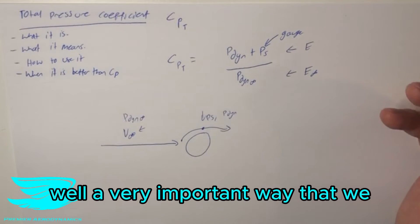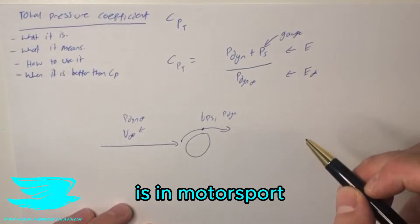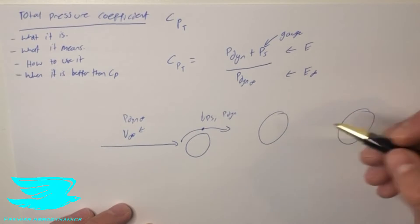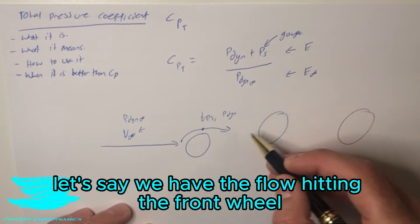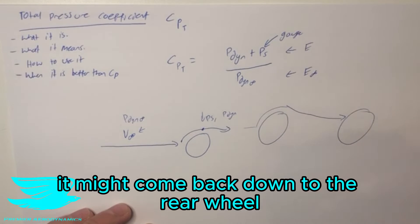A very important way that we can use this and it is used in real life is in motorsport. Let's say we have a car with two wheels. What we often do, and anywhere really on the car, it doesn't have to be wheels, but let's just take the wheels. Let's say we have the flow hitting the front wheel and unfortunately it might come back down and hit the rear wheel.